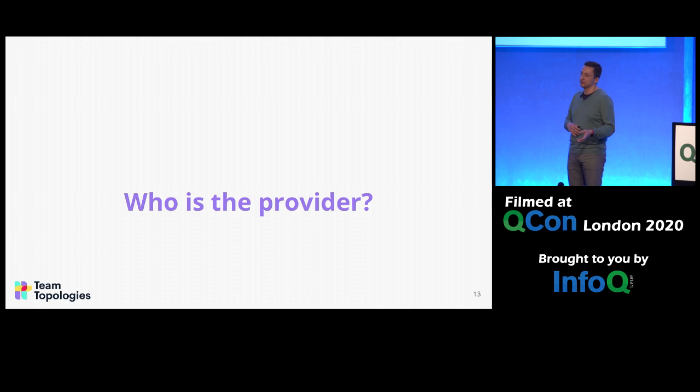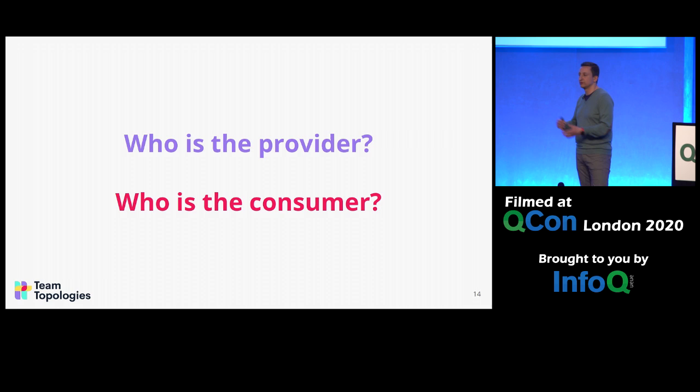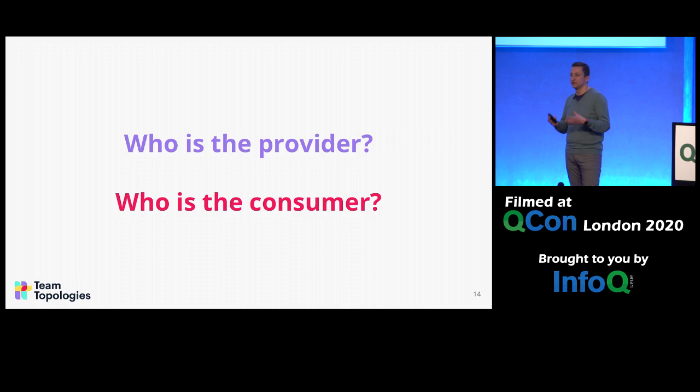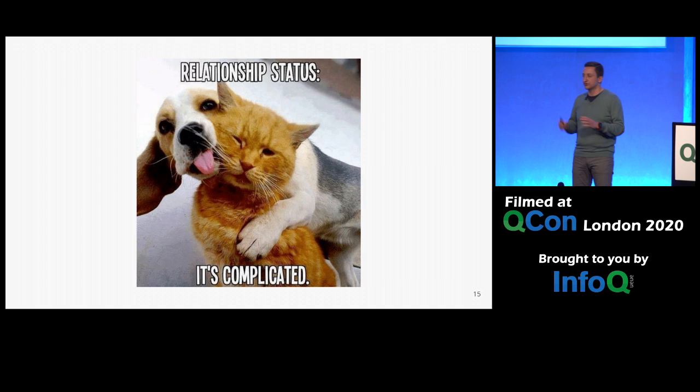So a lot of things need to happen for us to actually be able to use Kubernetes as a platform. The question is: who is the provider — who is the owner responsible to do all of this? And who is the consumer — the teams that actually want to benefit from the Kubernetes platform? Oftentimes in organizations this is not very clear, the boundaries are blurry, and it's complicated to understand who is responsible for what and what are the implications of decisions we make on other teams.